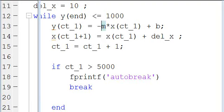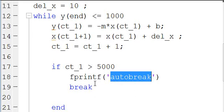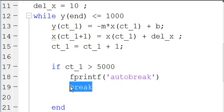So in that case, when ct_1 got bigger than 5000, it would write autobreak to the command window and then break out of the loop. And that way, it does two things.